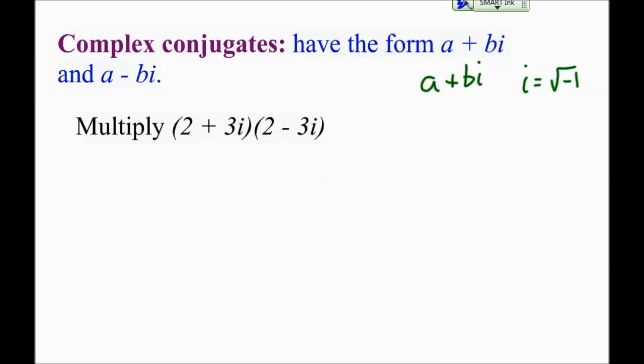The first thing I want to introduce you to is the idea of a complex conjugate. Complex conjugates have the form a plus bi and a minus bi. And they have a very interesting property when you multiply them together.